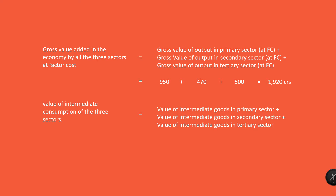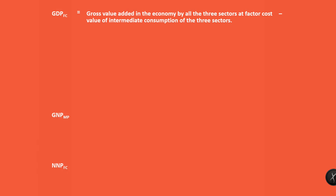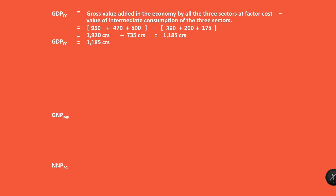Value of intermediate consumption of the three sectors: intermediate goods in primary sector plus secondary sector plus tertiary sector equals 360 plus 200 plus 175 equals 735 crores. Therefore, gross domestic product at factor cost is 1,920 minus 735 equals 1,185 crores.